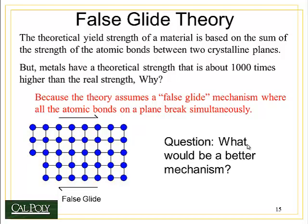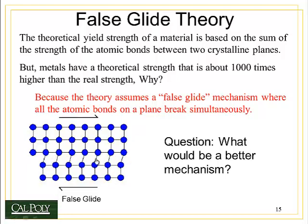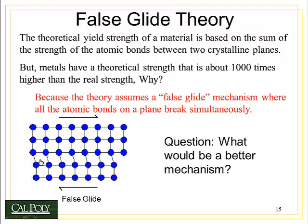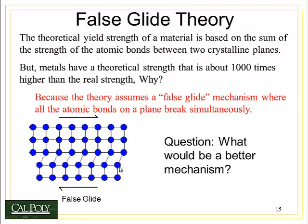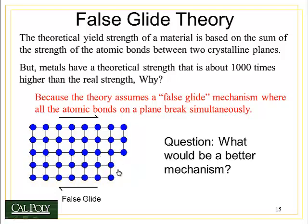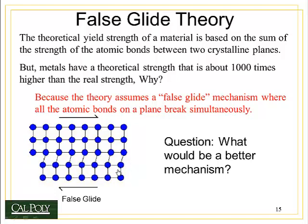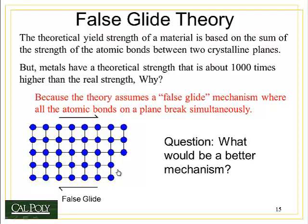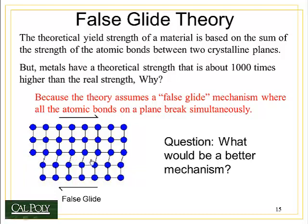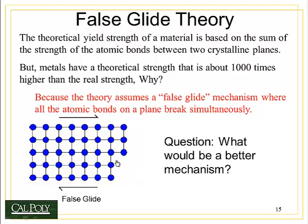First, let's talk about the wrong theory. This was called false glide theory, and it was the idea that if I broke all the bonds along one plane — as this demonstration shows — I can move the crystal or slip the crystal from one position to another. The theory assumes what is now called a false glide mechanism, where all the atomic bonds along this plane are broken simultaneously. But there are two problems with this.